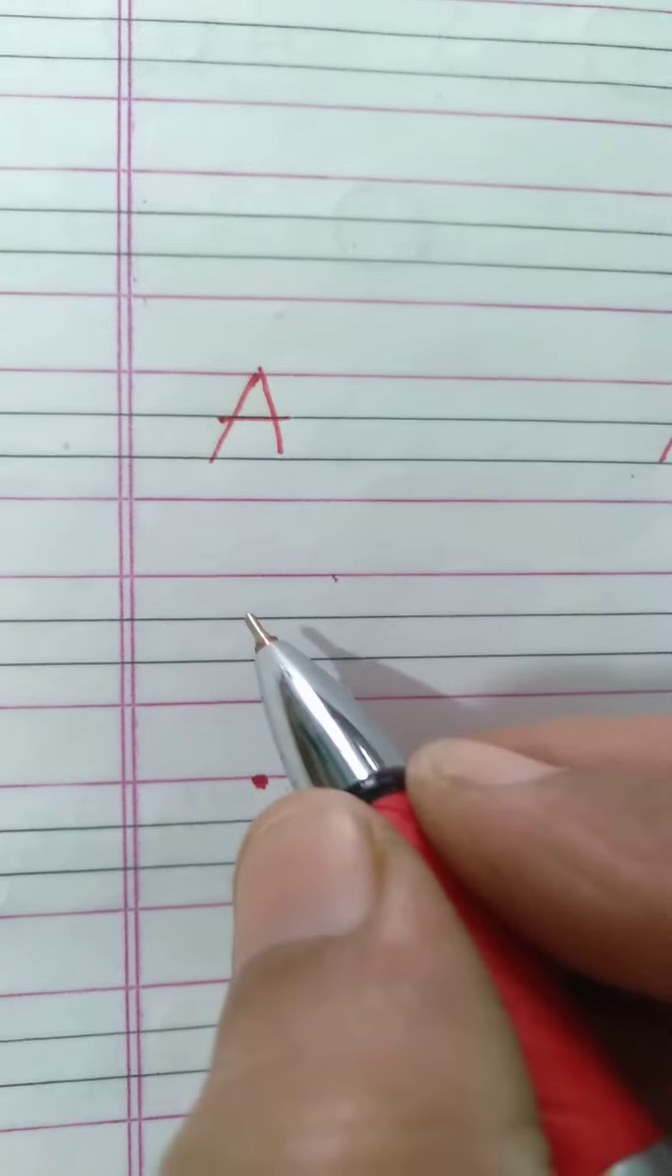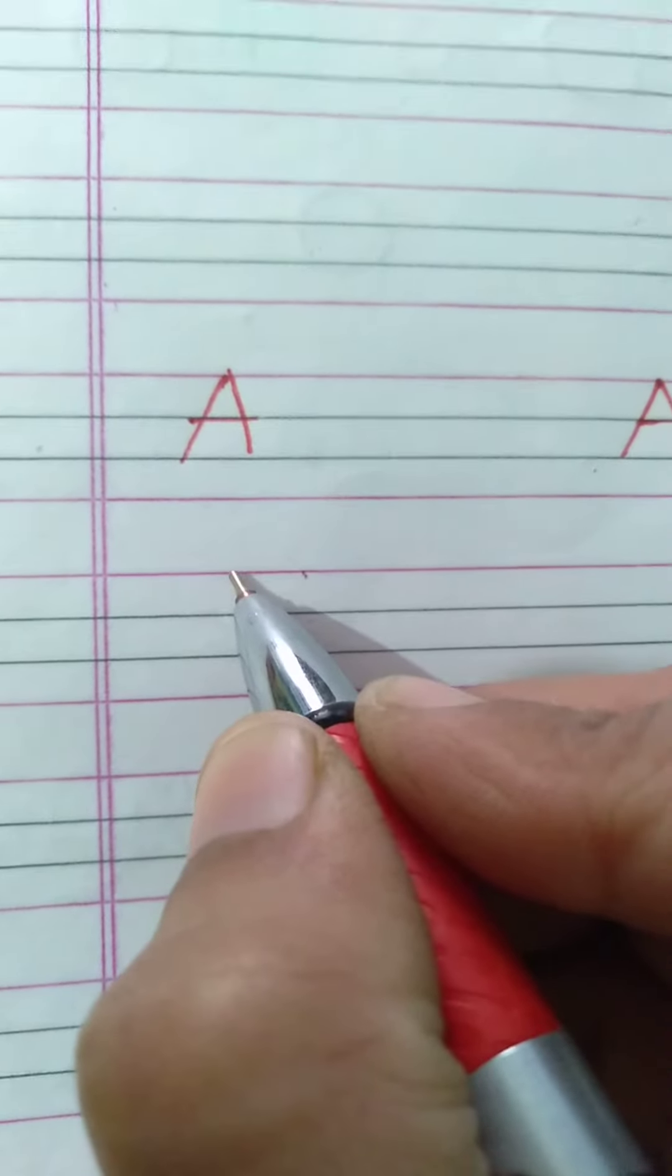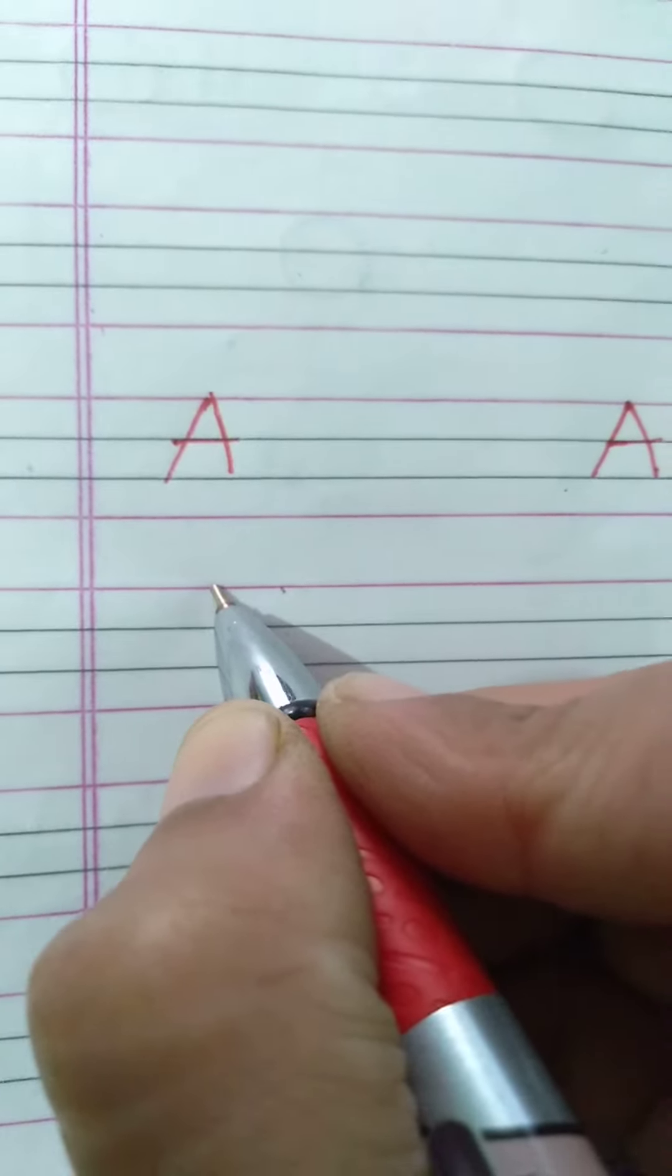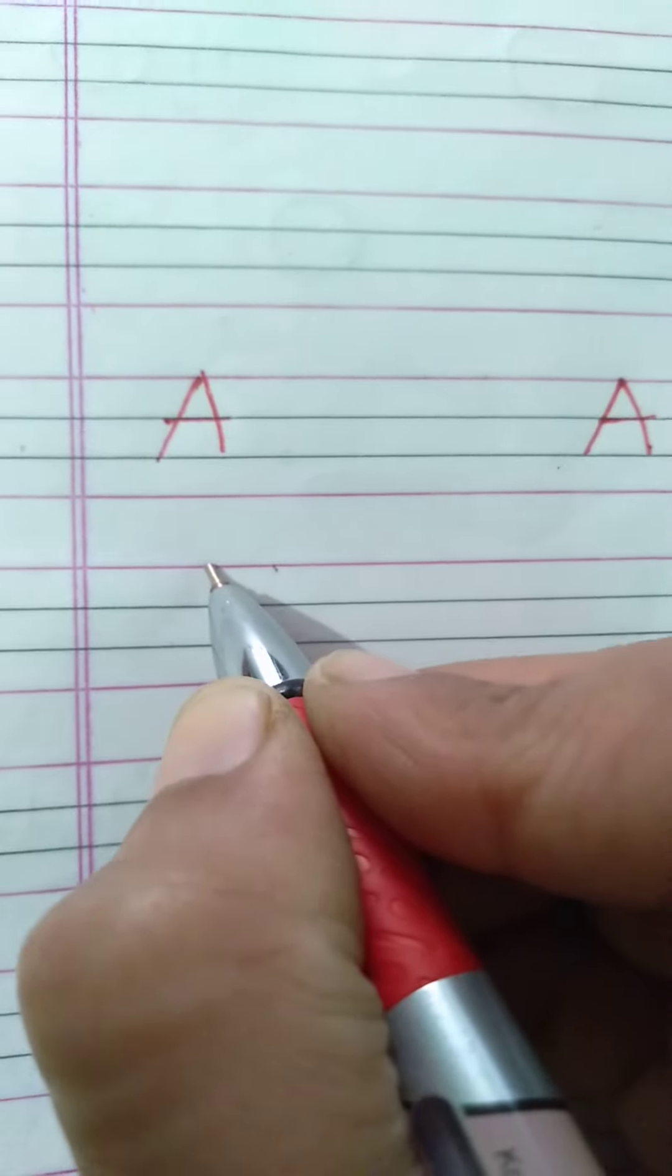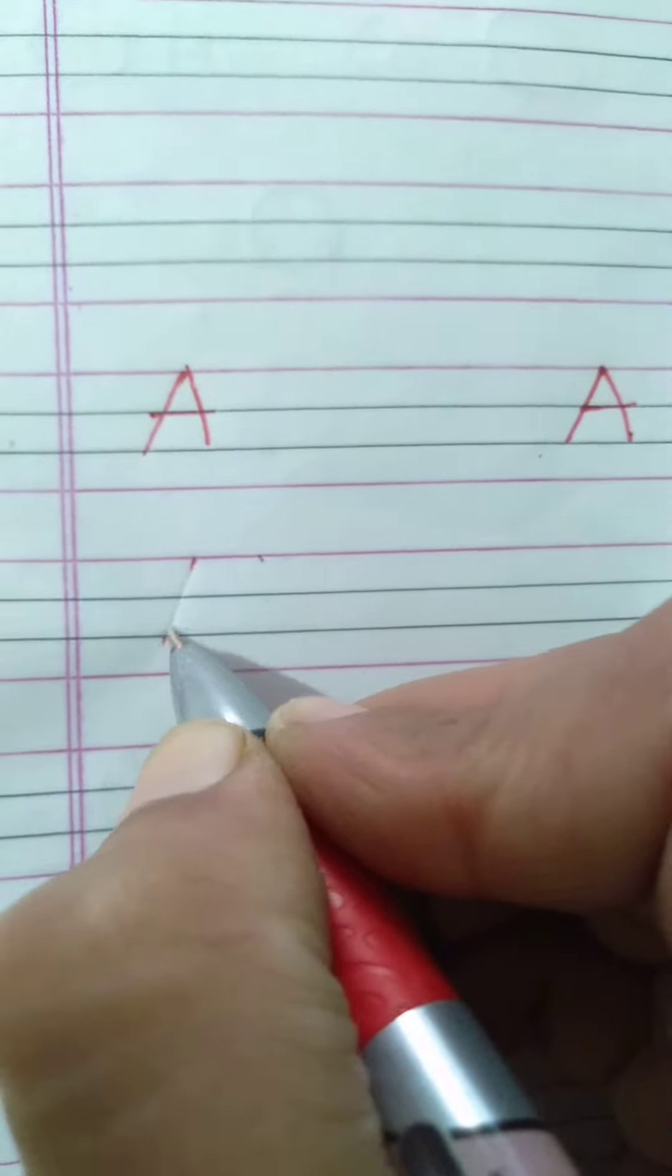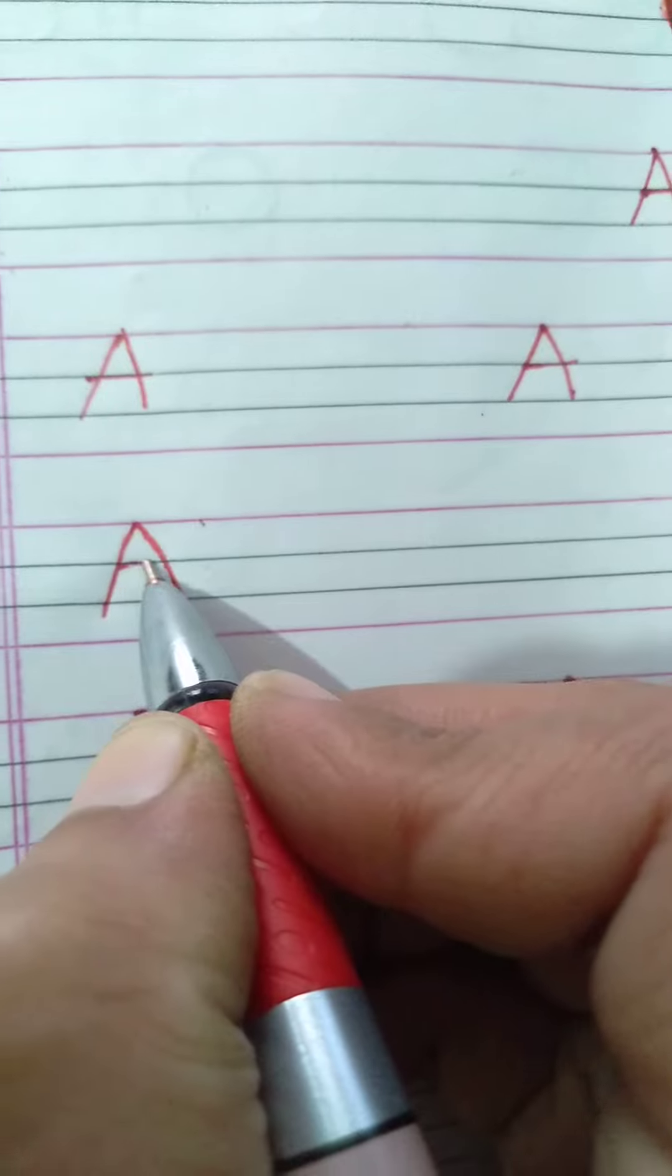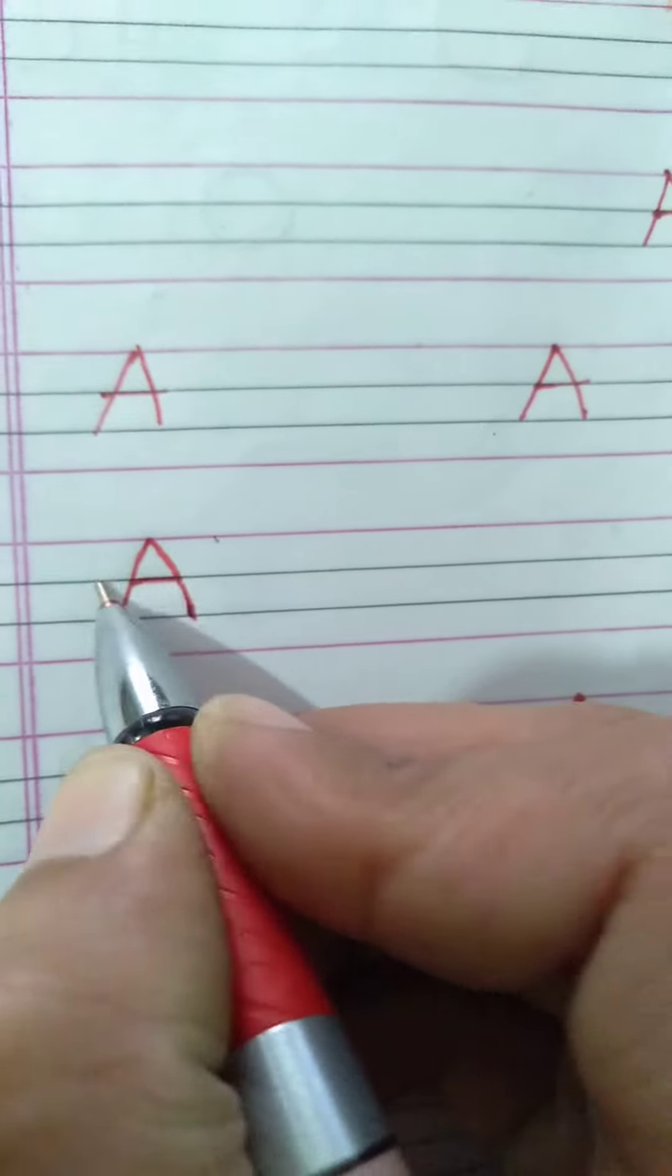You have to draw a backwards slanting line from this red line to third line like this. Again, a forward slanting line and again a small sleeping line between these two lines.